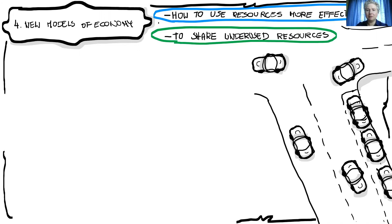Also, most everyday commuting — home to work and work to home — is done by drivers in their own cars, but in a four or five seat car there is usually only one person: the driver. The rest of the space is unused. So why not take someone else who is also traveling in the same direction and use that empty space in the car?